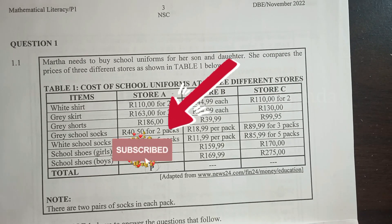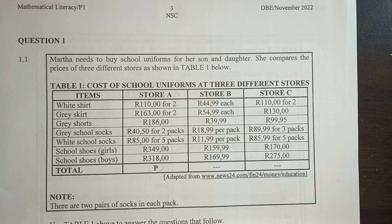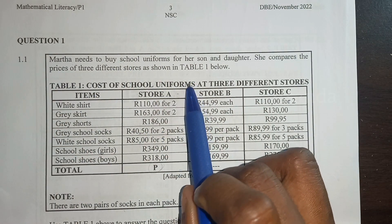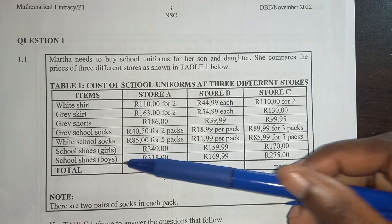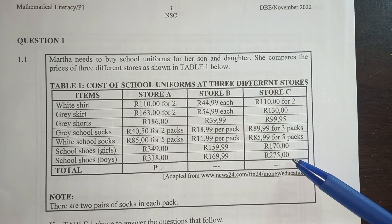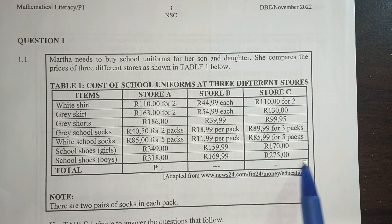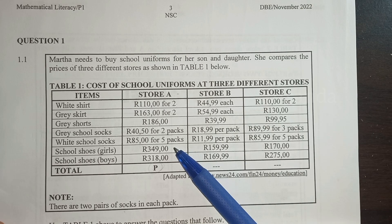Martha needs to buy school uniforms for her son and daughter. She compares the prices of three different stores as shown in table one. The table shows the cost of school uniforms at three different stores — these are the items she wants to buy and the prices she recorded. She hasn't totaled how much she would need for everything in each shop, so that might be up to us.